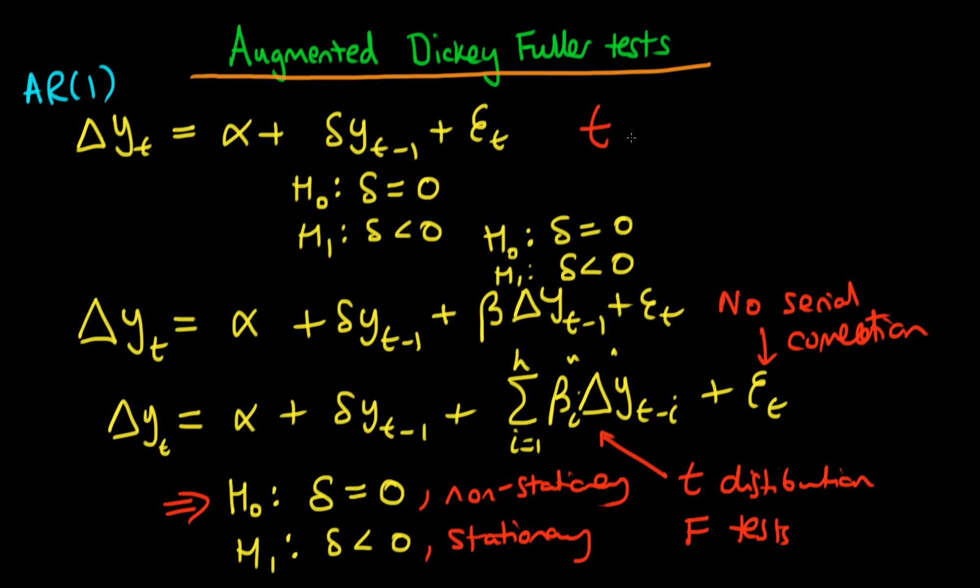It turns out we can do exactly the same as before: we compare the t-statistic from our least squares estimator of delta (δ̂) with the Dickey-Fuller distribution, and we compare it with the critical values from that distribution, remembering...